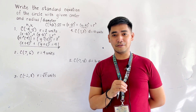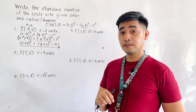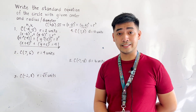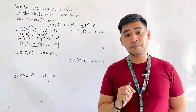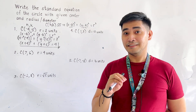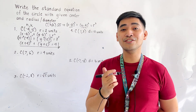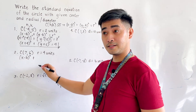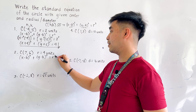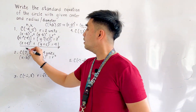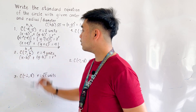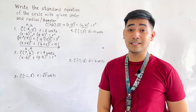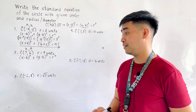For the second problem, we have the center located at (7, 6), with radius equal to 4 units. We can merely look at the problem and tell the answer, but let us first substitute into the equation. Writing the formula: x minus h, quantity squared, plus y minus k, quantity squared, is equal to r squared. Our h is 7, k is 6, and the radius is 4 units.